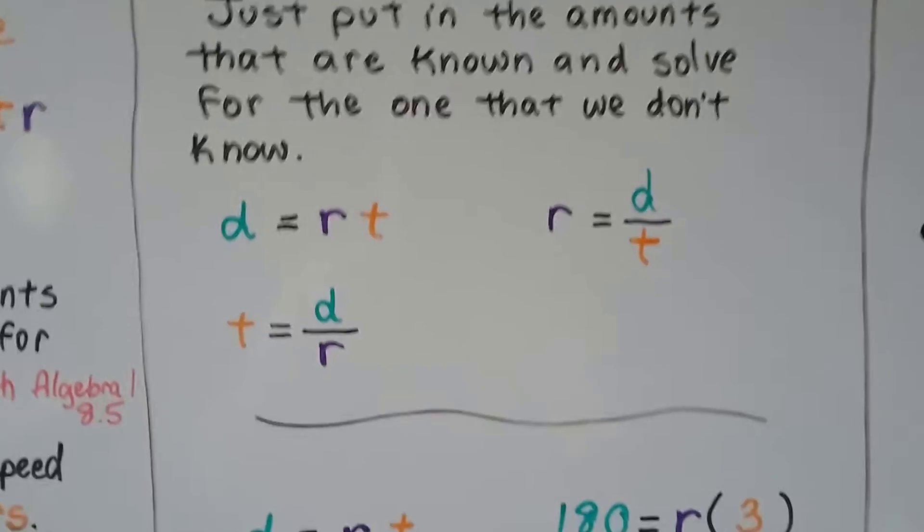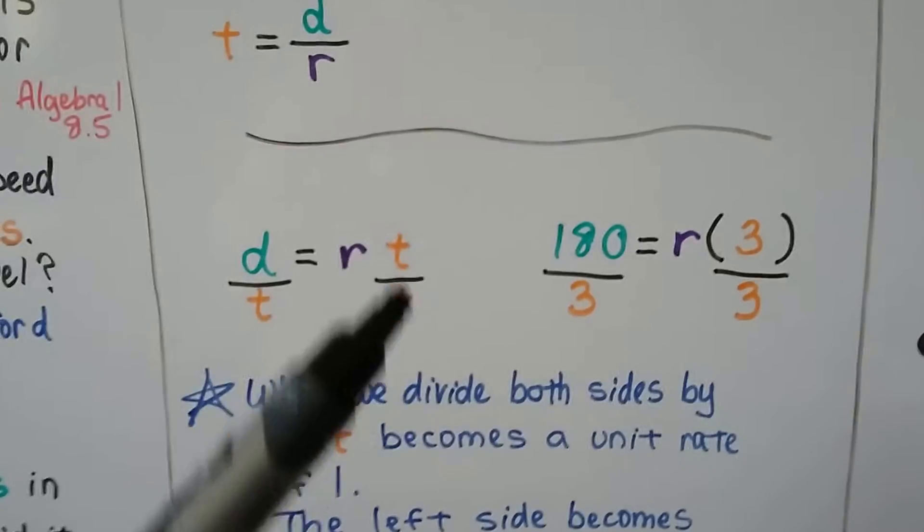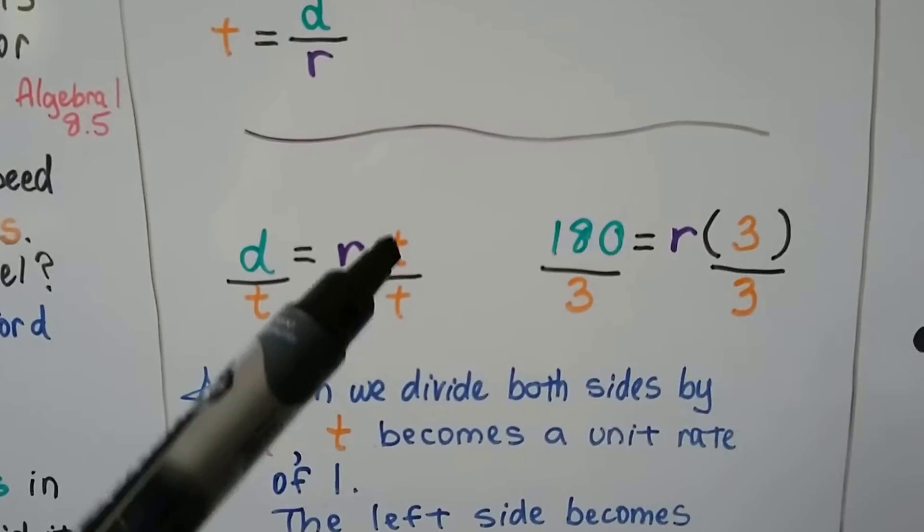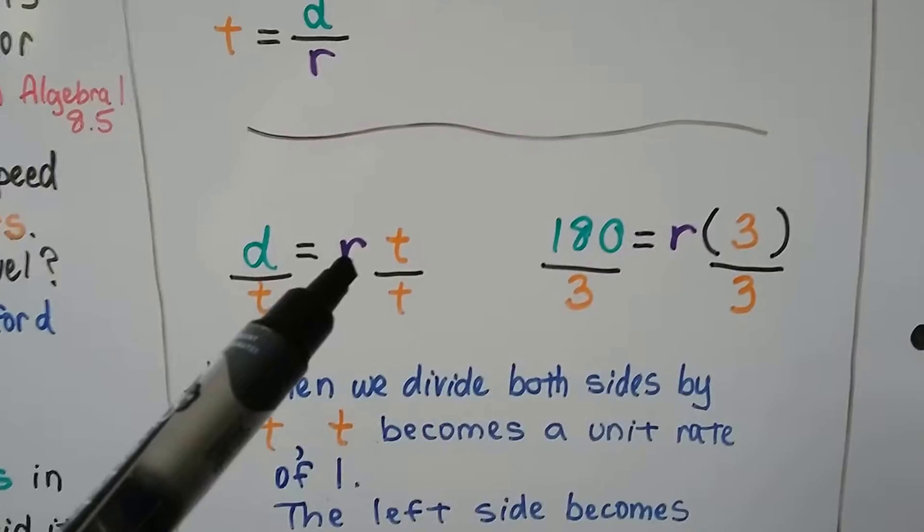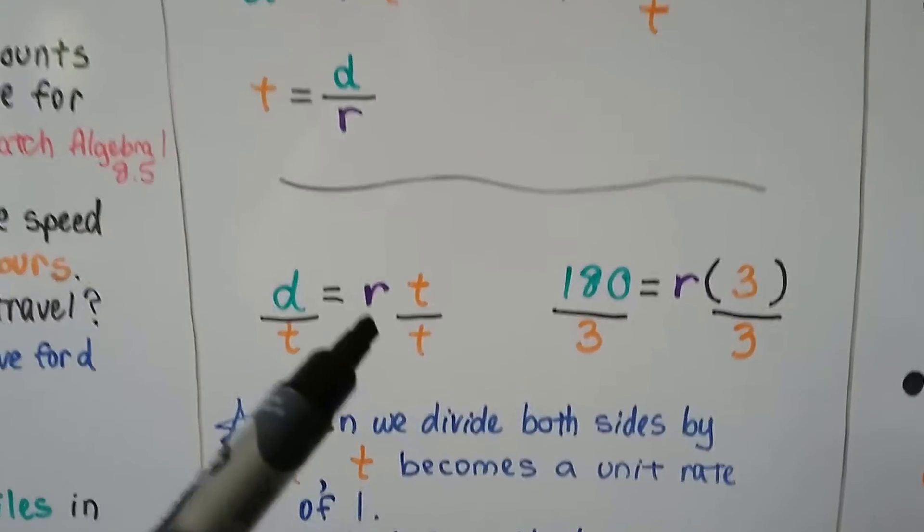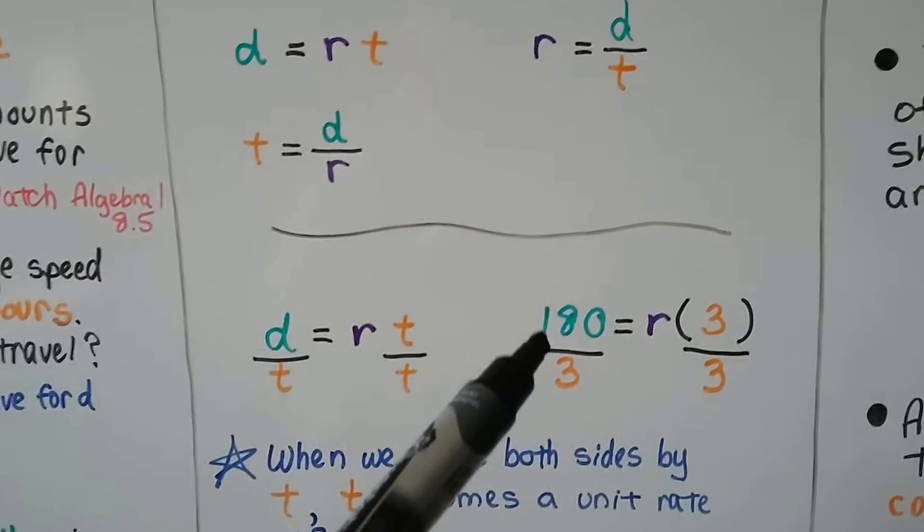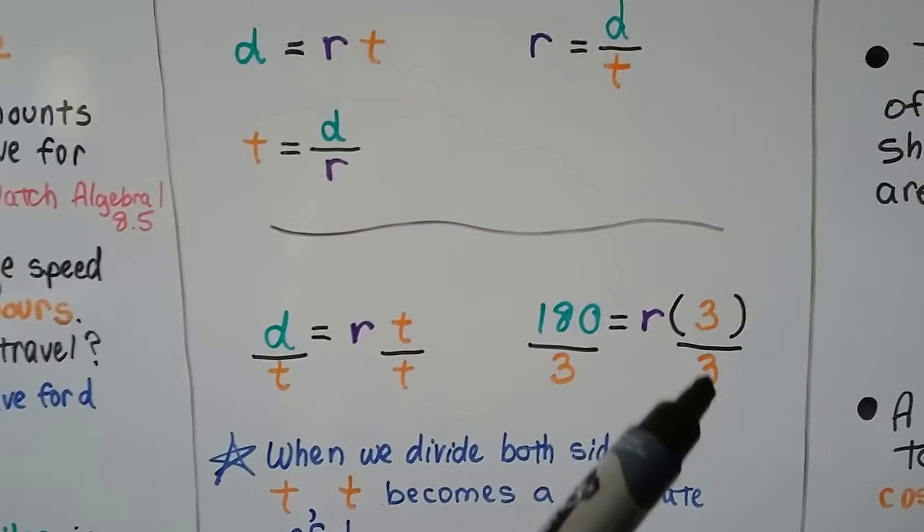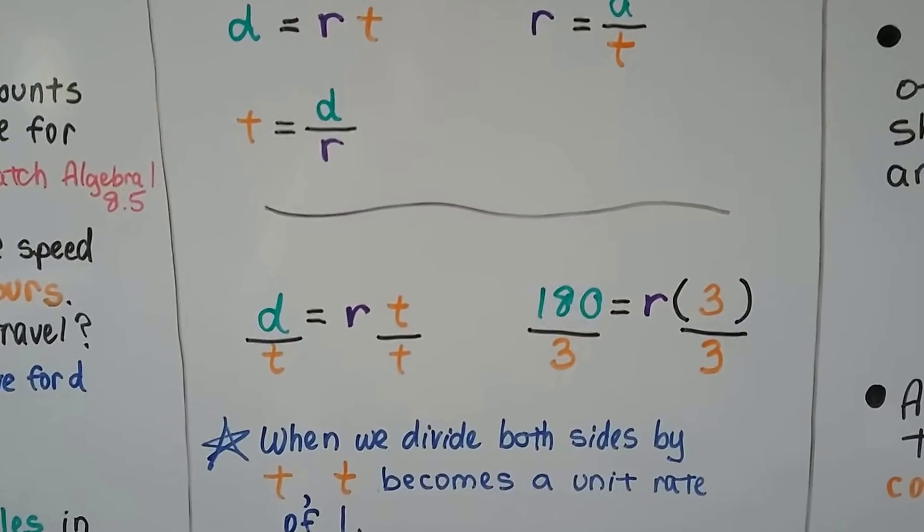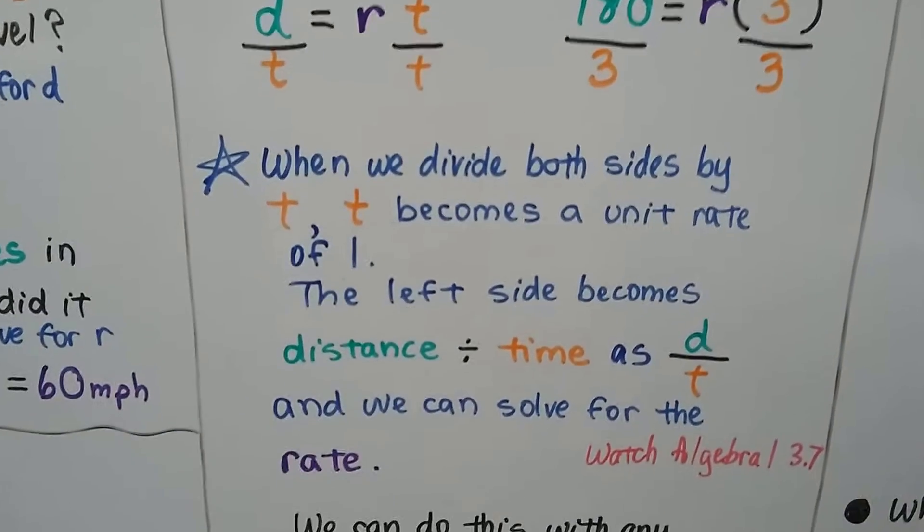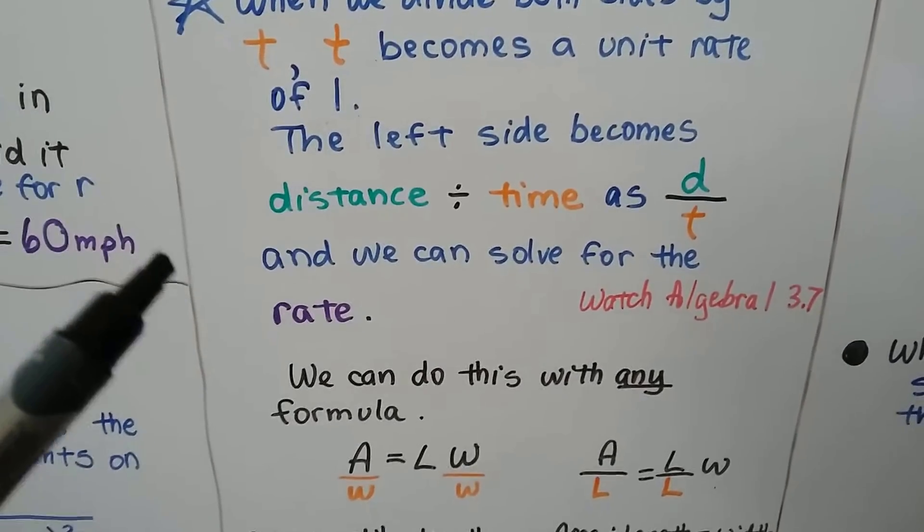Now, how did I switch those all around like that? It's pretty easy when you think about it algebraically. If we have distance equals rate times time, and we divide both sides by that t, that turns that into a giant 1 with the same numerator and denominator, doesn't it? And it cancels it out, so it's just an R on this side. It's one R. So now, we've got R equals d divided by t. Just like we had the 180 divided by 3, we divide both sides by 3, that makes that a 1. We just have an R equals 60. When we divide both sides by the t, the t becomes a unit rate of 1. And the left side becomes distance divided by time as d over t. And we can solve for the rate.